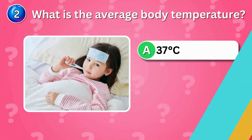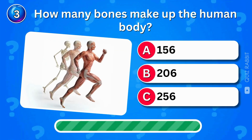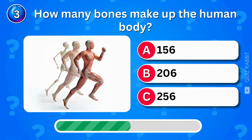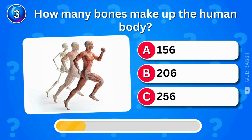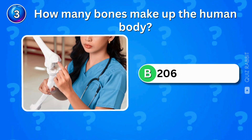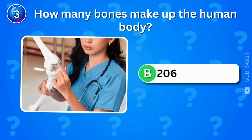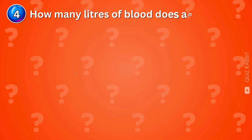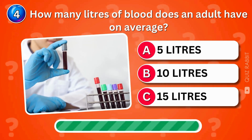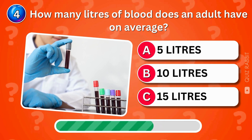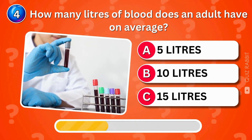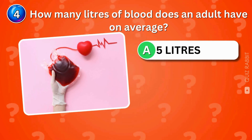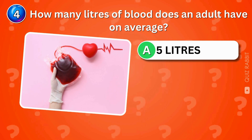How many bones make up the human body? 206 bones in the human body — did you get it right? That's a lot of bones to keep us moving! How many liters of blood does an adult have? On average, an adult has around five liters of blood — that's a lot of fluid keeping you alive.